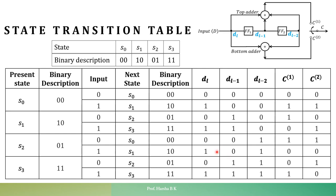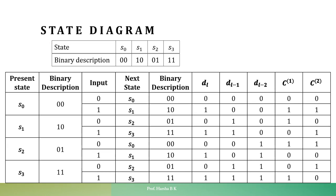This completes the state transition table for the given encoding circuit. Now let us write the state diagram from the state table and state transition table. Since there are four states, we arrange S0, S1, S2, and S3. The arrangement is very important based on the relationships between the present and next states.